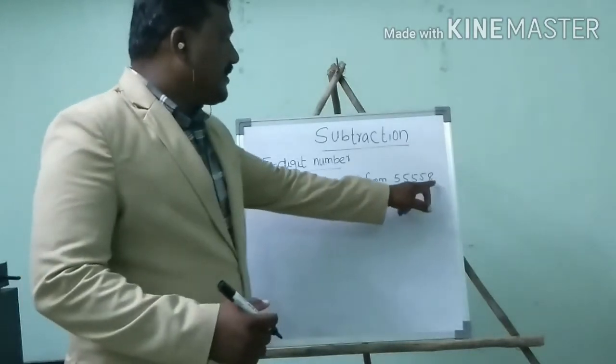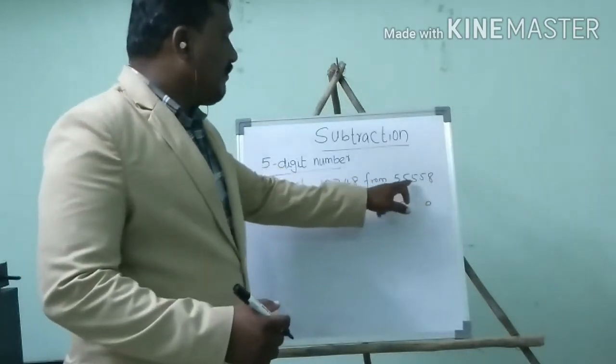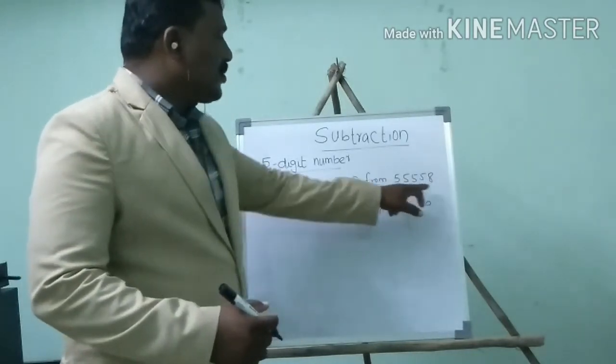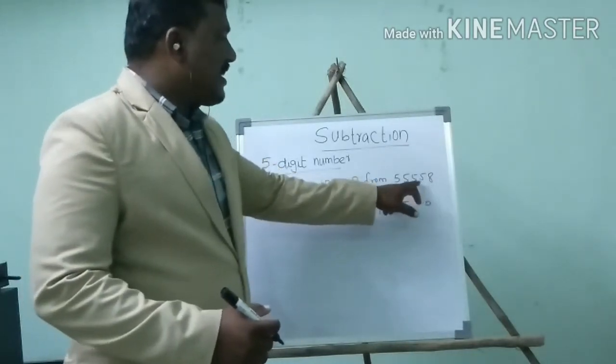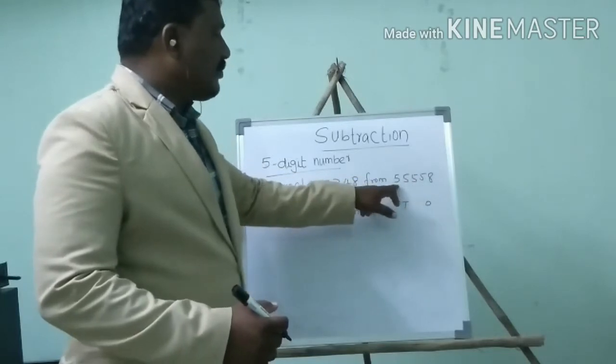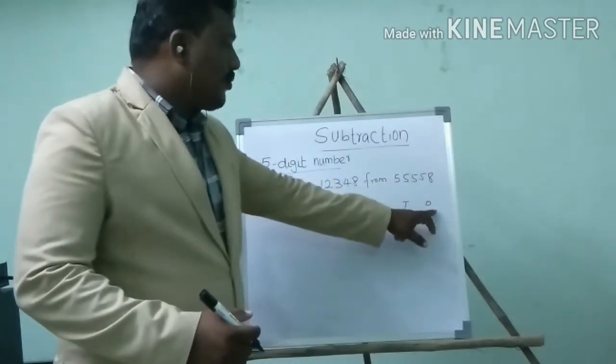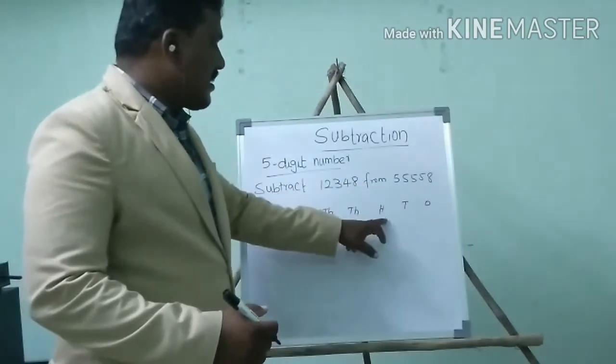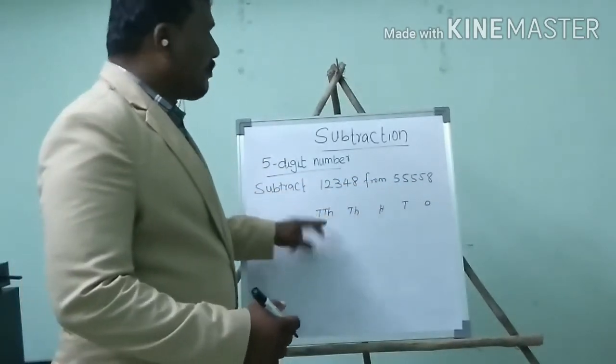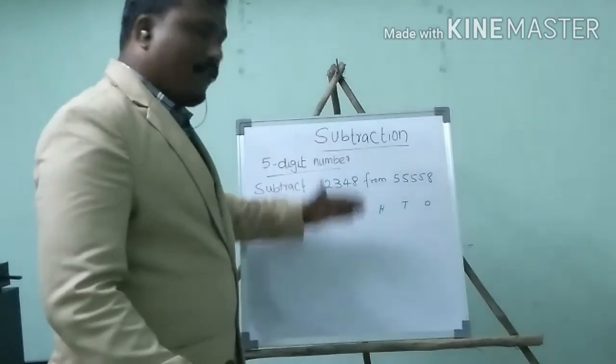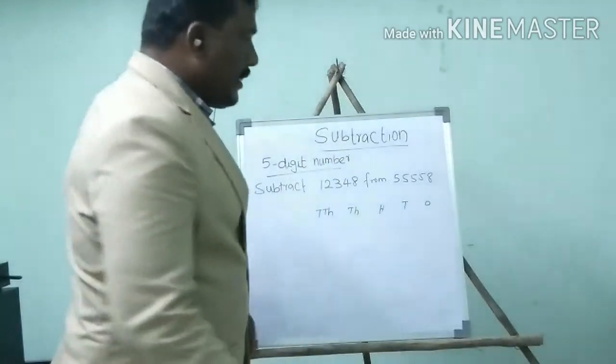How many digits are there? 1, 2, 3, 4, 5. So: ones, tens, hundreds, thousands, ten-thousands. Totally 5 places — ones, tens, hundreds, thousands, ten-thousands place. I have formed this table.